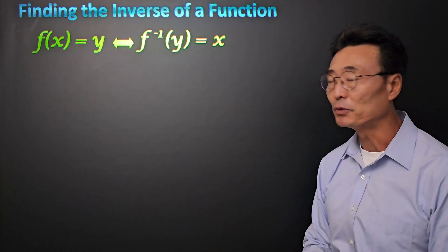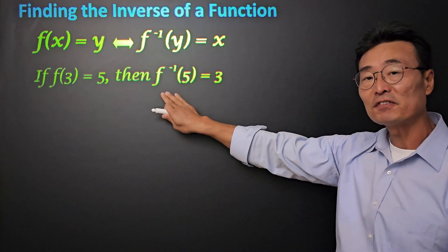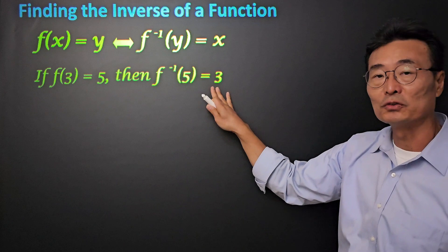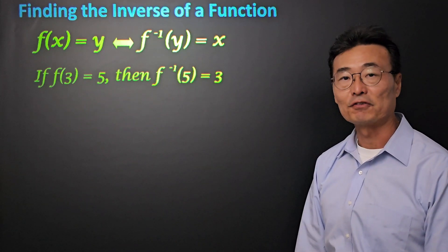Here's an example. If we have f of 3 equals 5, then f inverse of 5 will equal to 3 since we switch the 3 and the 5 for the inverse function.